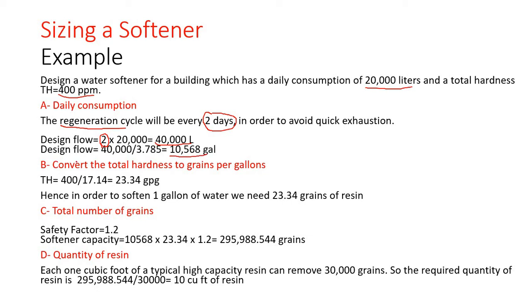Second, we need to convert the total hardness to grains per gallon. We will divide 400 ppm by 17.14, and we will get 23.34 grains per gallon. Hence, in order to soften one gallon of water, we need 23.34 grains of resin.